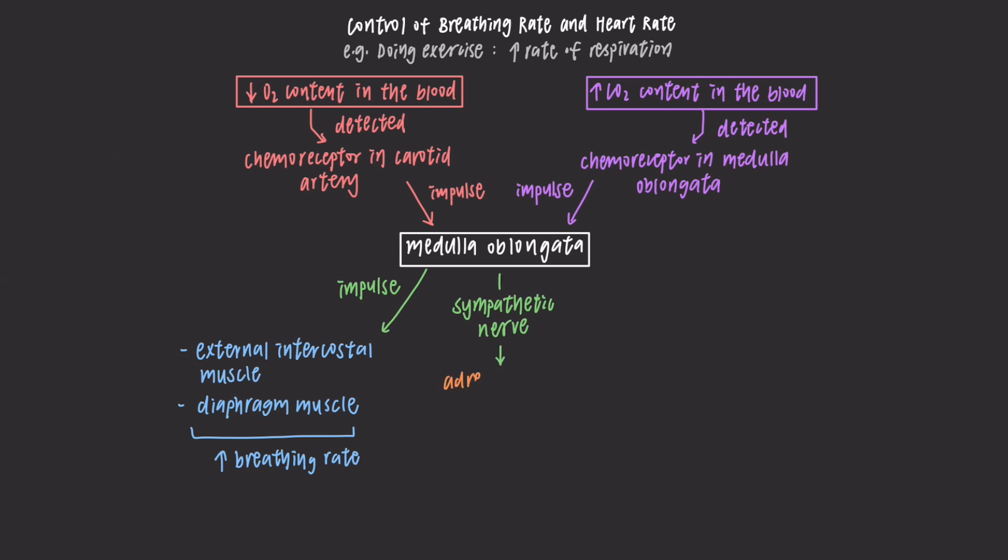It sends impulses to the adrenal gland to secrete the hormone adrenaline, also called epinephrine. It will be transported by the blood to the SA node, the pacemaker in the heart. Medulla oblongata also sends impulses to the SA node.